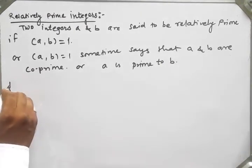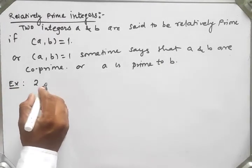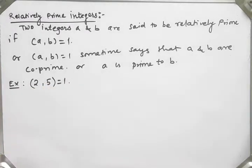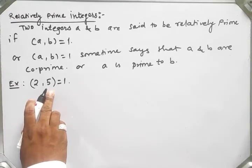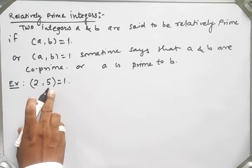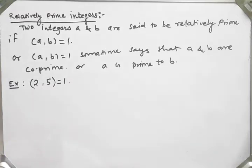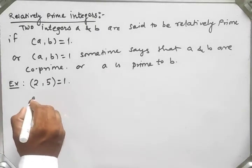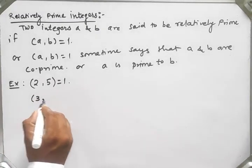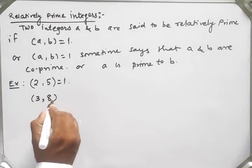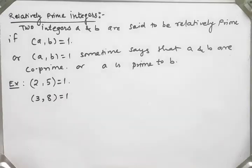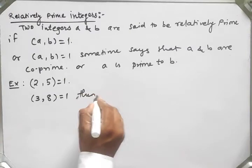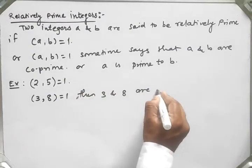For example, 2 and 5 have greatest common divisor 1, so we say 2 is prime to 5, or GCD of 2 and 5 is 1, so 2 and 5 are relatively prime. Similarly, if I take 3 and 8, then 3 and 8 have greatest common divisor 1, so we say that 3 and 8 are relatively prime.